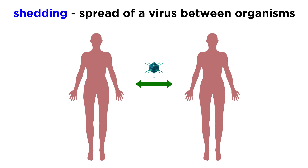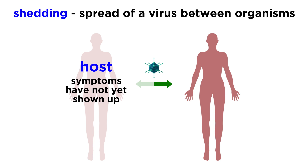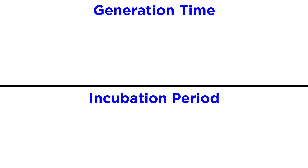We use the term shedding to refer to the spread of a virus to another organism. It turns out that the most likely time for virus shedding to happen is before any symptoms have shown up in the host. This can vary from virus to virus, of course. And while we're at it, let's quickly talk about the difference between generation time and an incubation period.